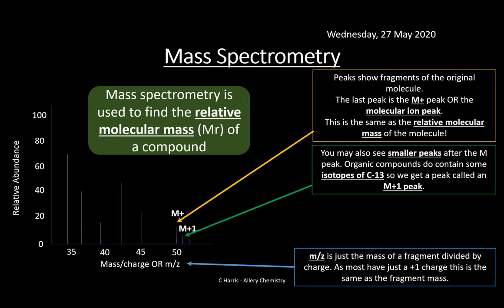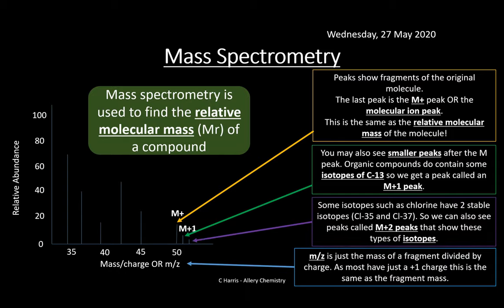You may also see smaller peaks. The one just to the right of the M plus peak is called an M plus 1 peak, generally caused by isotopes. A classic example is carbon: carbon normally has a mass of 12, but carbon-13 isotopes will show a slightly smaller peak just to the right, called M plus 1. There can also be an M plus 2 peak — for example, chlorine has two stable isotopes, chlorine-35 and chlorine-37. If a compound contains chlorine, you'll see an M plus 2 peak.